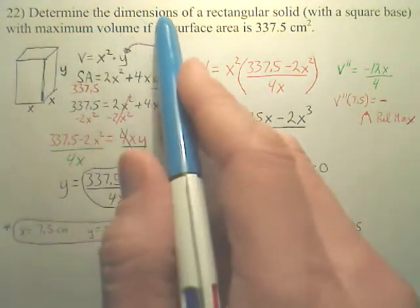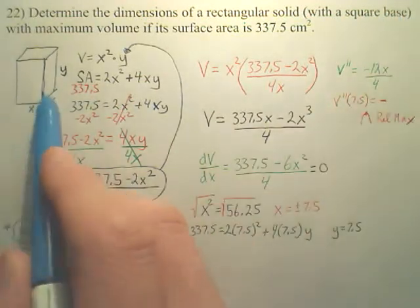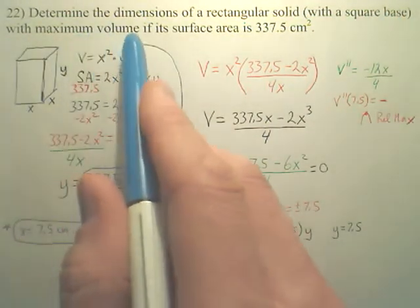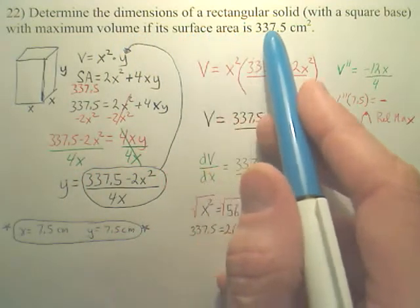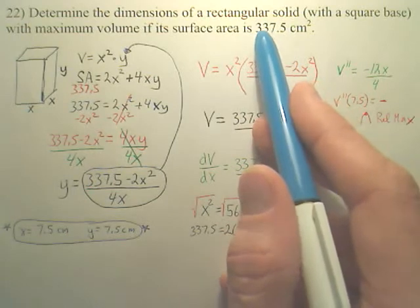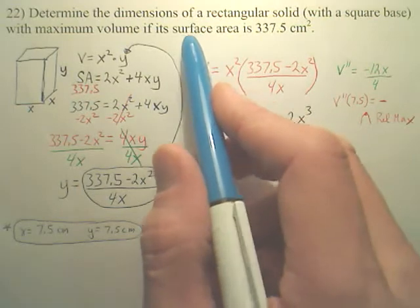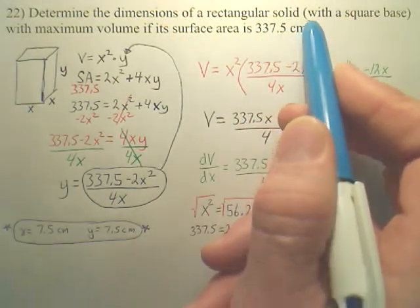Alright, determine the dimensions of a rectangular solid with a square base with maximum volume if its surface area is... I keep making mistakes. Anyways, the surface area is 337.5 square centimeters.